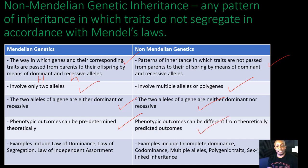Examples of Mendelian genetics include the law of dominance, law of segregation, and the law of independent assortment. While examples of non-Mendelian genetics include incomplete dominance, codominance, multiple alleles, polygenic traits, and sex-linked inheritance.